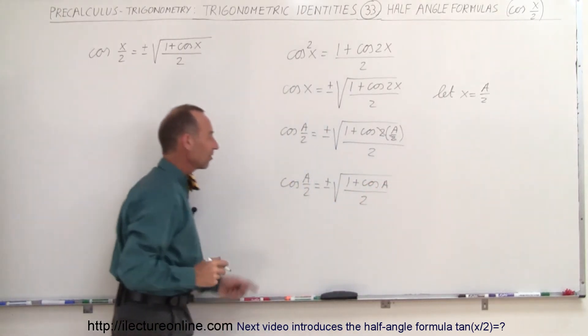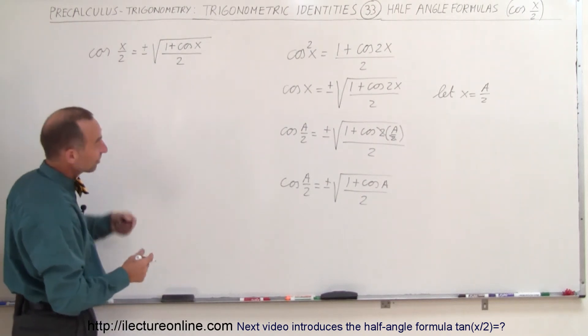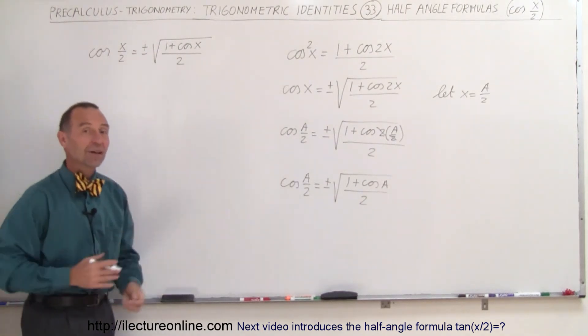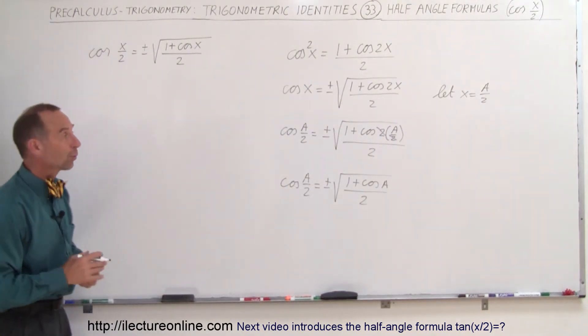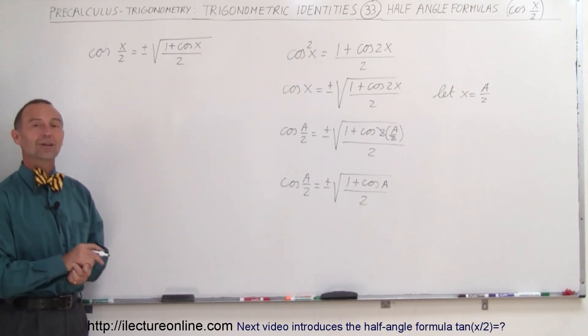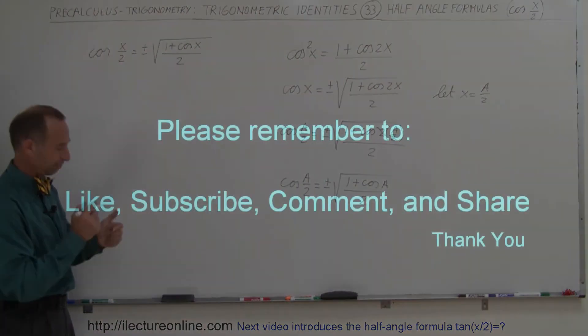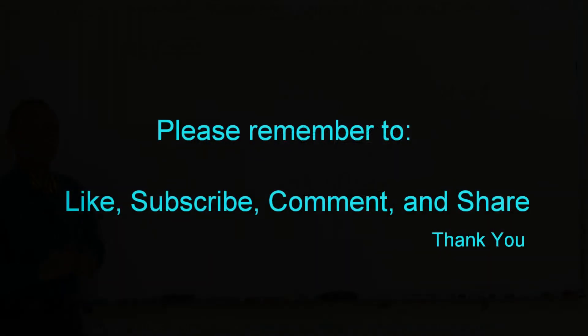And that's exactly the same as what we have over here, except we use x instead of a. And that's where that half angle formula came from for the cosine.